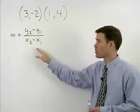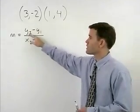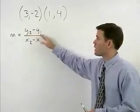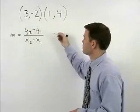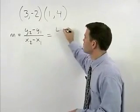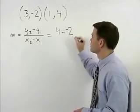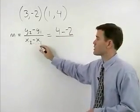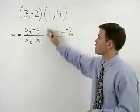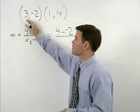Using our slope formula, we take the second y minus the first y, which in this case is 4 minus a negative 2, over our second x minus our first x, which in this case is 1 minus 3.